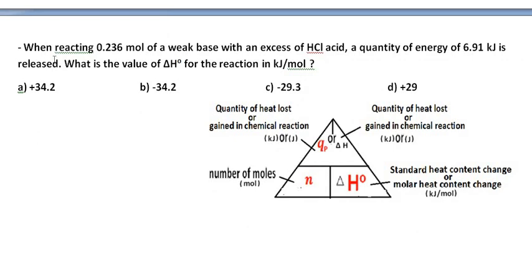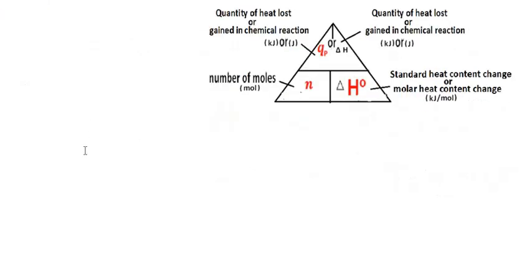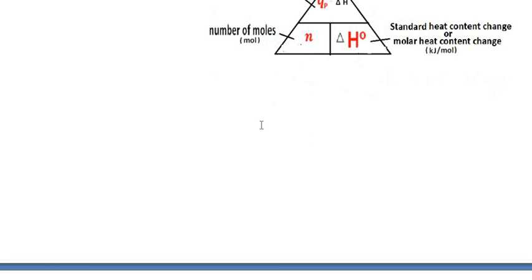Here is another problem. When reacting 0.236 moles of a weak base with an excess of HCl — which is called the neutralization reaction — a quantity of energy, 9.91 kJ, is released. Divide QP over the number of moles N. Divide these two numbers to get delta H naught in the same way.